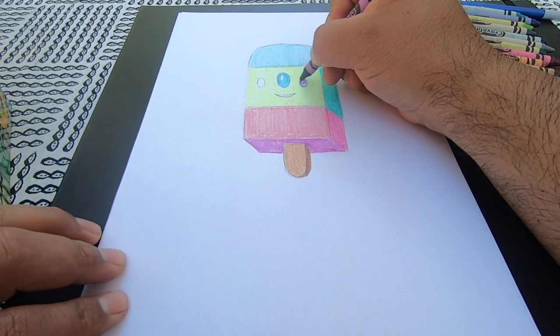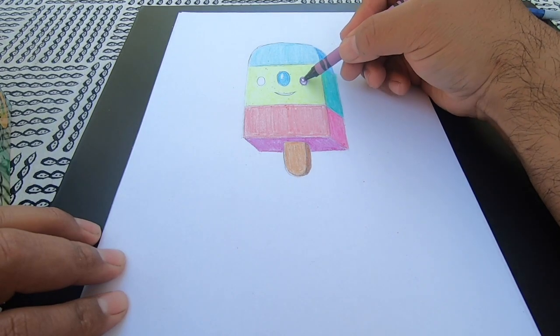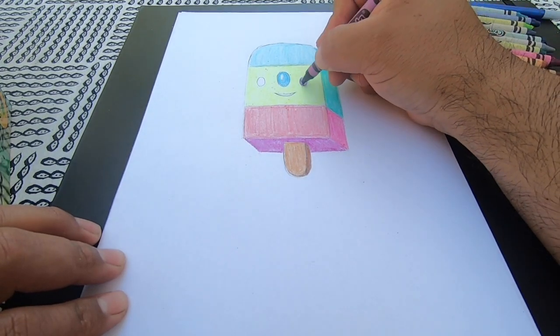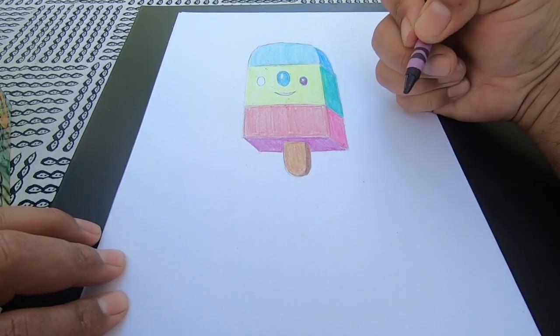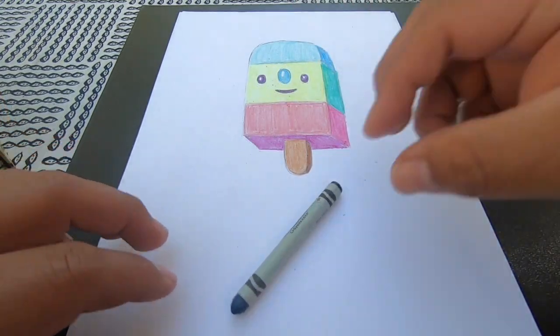Cuando coloreo los ojos y la nariz quiero dejar un reflejo blanco. Hago esto dejando un espacio vacío en el papel para representar un tono brillante, así como los ojos que hice aquí.